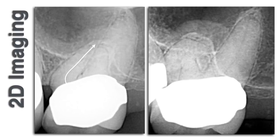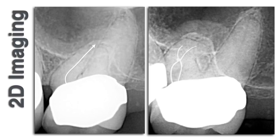Looking at the distal view of this mesial buccal root, despite this wild curve at the cervical area, we can see some very unusual anatomy. It's rare to see this kind of 3D anatomy in our 2D imaging, but in this case we're lucky. This is what was in there: an MB1 and MB2 confluent mid-root. It looks like a little knot there almost, and then a bifurcation of that canal system.